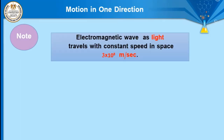Note: an electromagnetic wave, such as light, travels with a constant speed in space equal to 3 × 10⁸ meters per second, or 3 × 10⁵ kilometers per second. This is the only object that moves with a speed measured in kilometers per second, and it is constant in space.